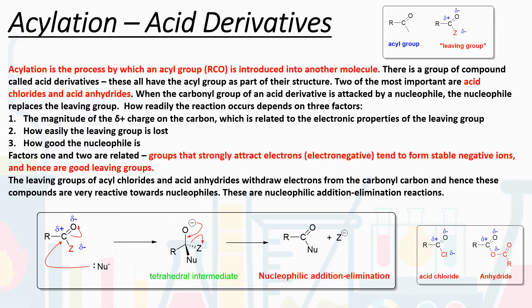It's slightly different — a normal carbon R group is just a C double bond O. We find the carbon R group in aldehydes, ketones, carboxylic acids, and esters. The acyl group has a carbon group attached to that carbonyl. There are a group of compounds called acid derivatives, and these all have the acyl group as part of their structure.